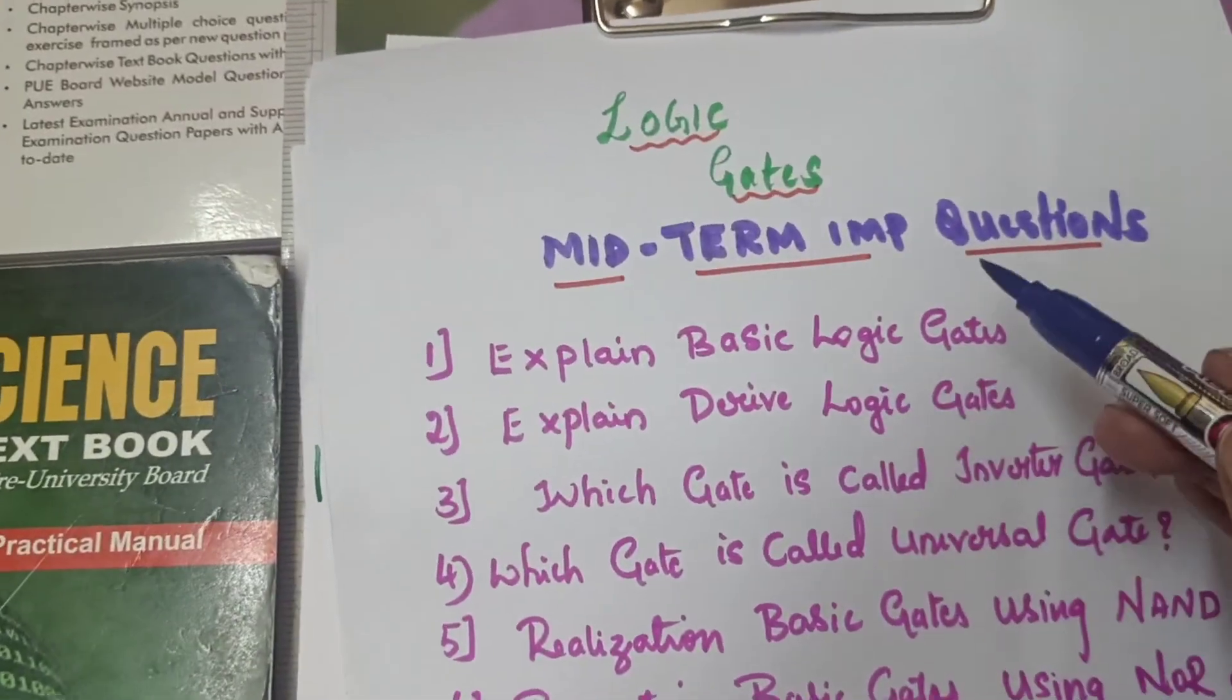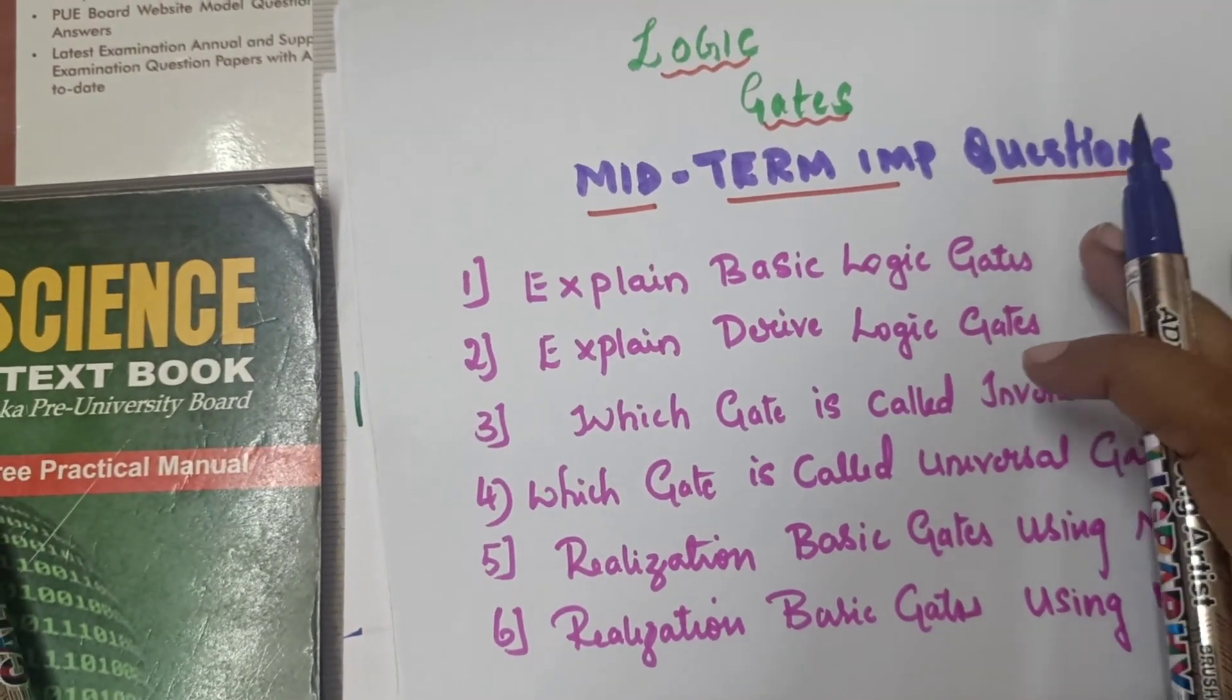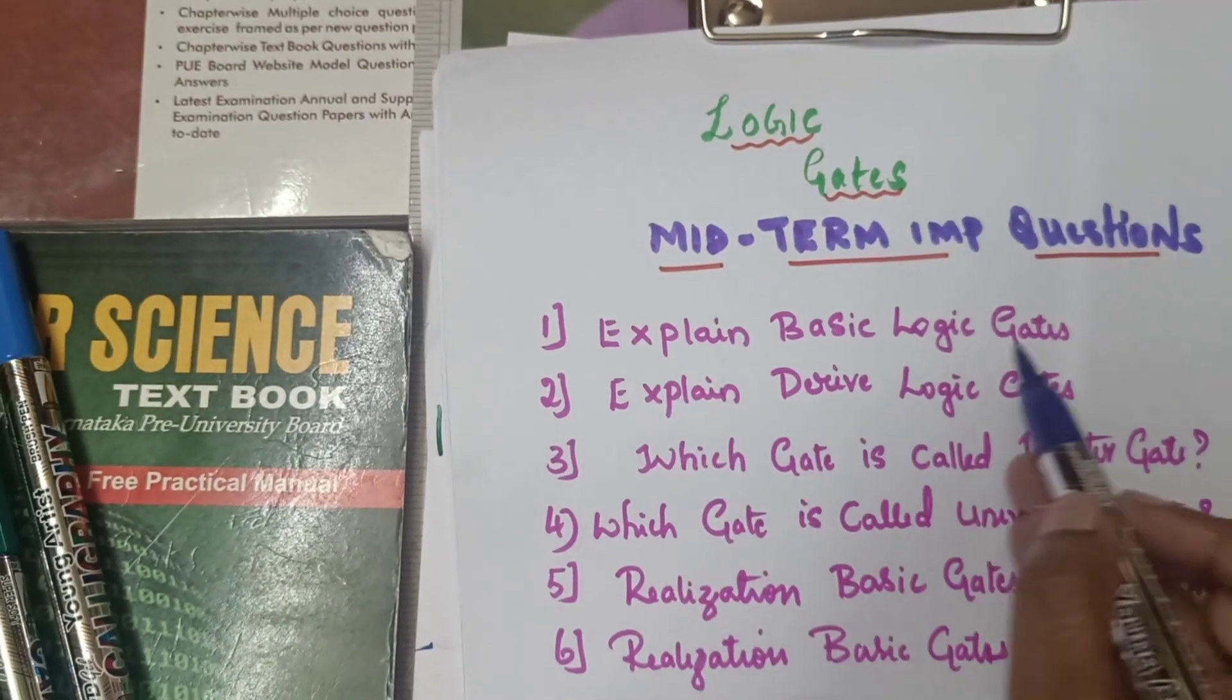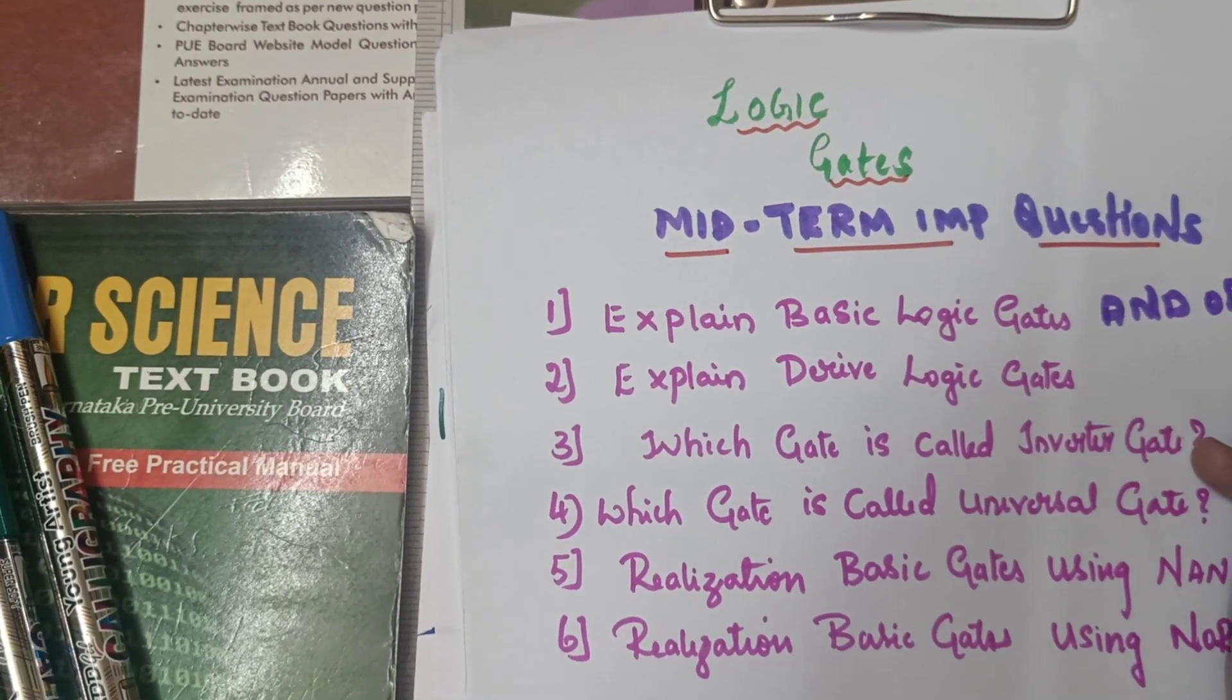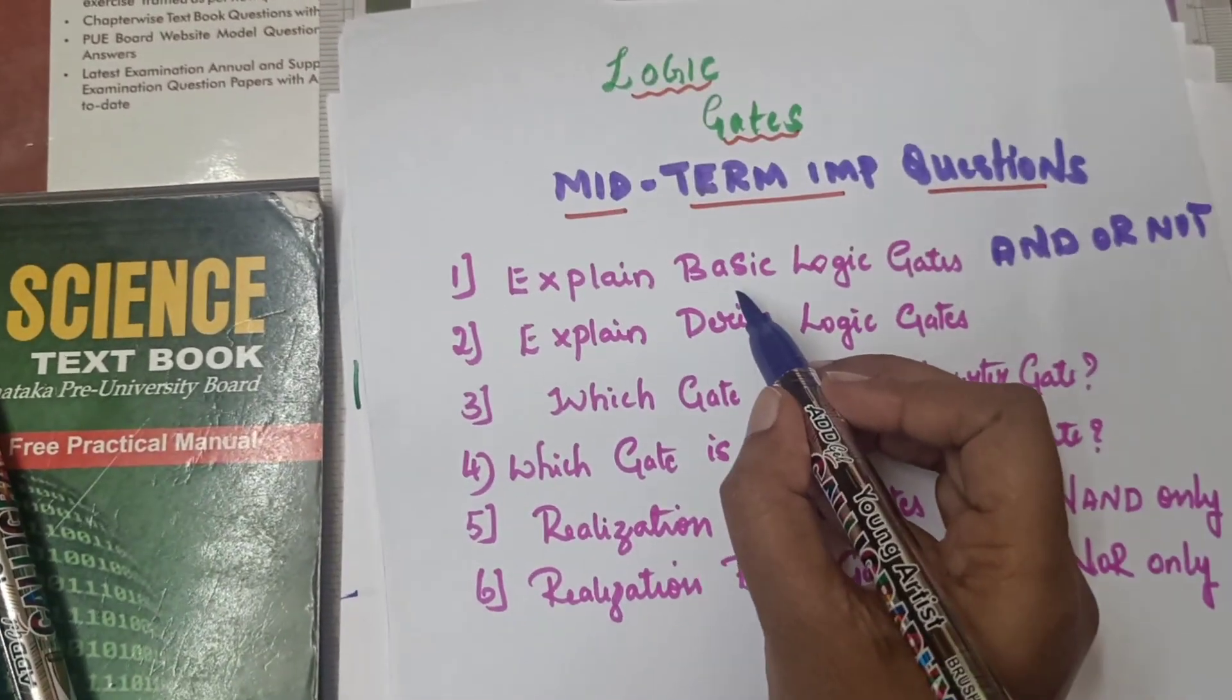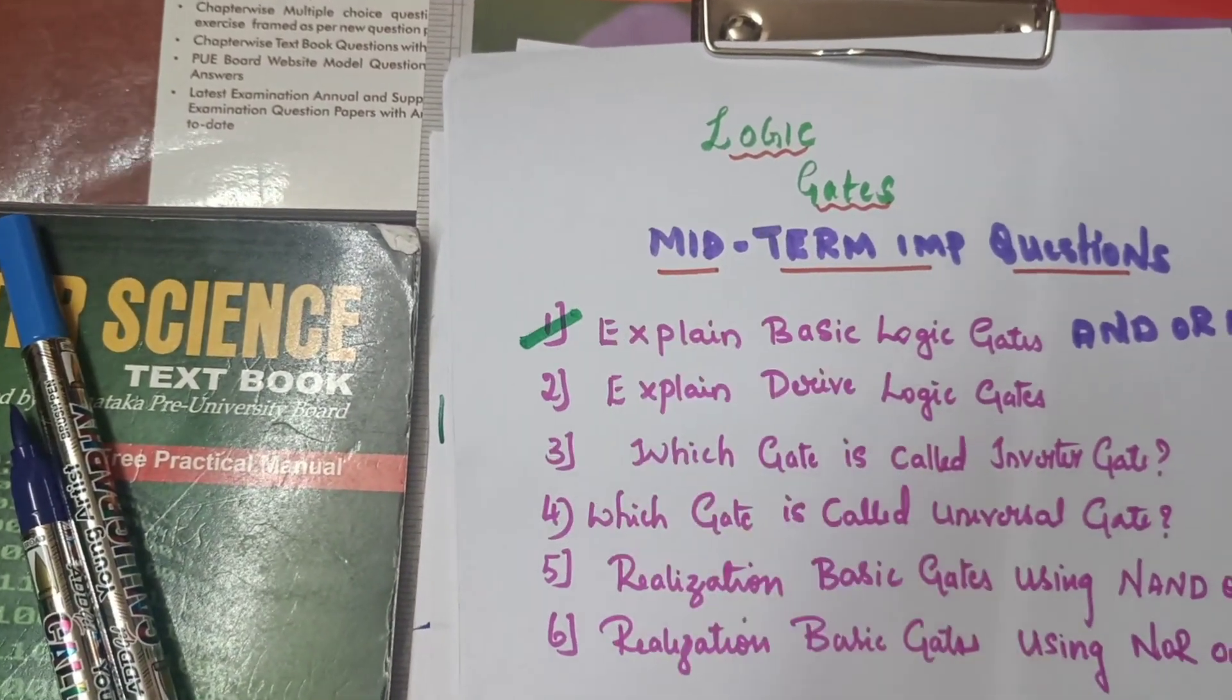First, I am going to talk about the other questions, the most important questions. The first question is explain basic logic gates. These questions are AND gate, OR gate, or NOT gate. These three concepts - AND, OR, NOT - are going to talk about the basic logic gates.